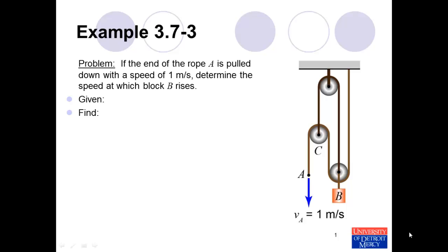This is example 3.7-3 from the textbook Conceptual Dynamics. The problem statement reads: if the end of rope A is pulled down with a speed of 1 meter per second, determine the speed at which block B rises.